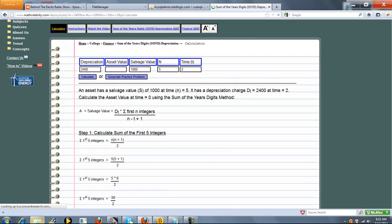Now our problem is summarized. Asset has a salvage value of 1000 at time 5. Depreciation charge at time 2 of 2400. Calculate the asset value at time 0.